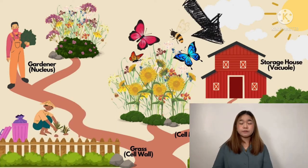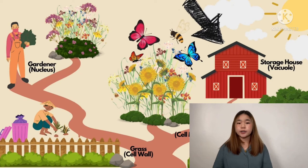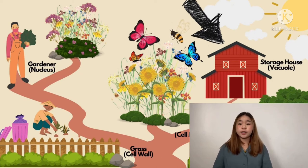Next, we have the storage house. The storage house is a place where the gardener stores fertilizers and tools for gardening. Just like the storage house, the vacuole is a storage area for the cell's nutrients.